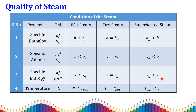Before getting into the problems, we need to identify the state or quality of the steam. There are three different conditions: wet steam, dry steam, and superheated steam. These are explained in detail in previous lectures. To recall: if the given specific enthalpy is less than the specific enthalpy of saturated vapor, it is wet steam. If the given specific enthalpy equals the saturated specific enthalpy of vapor, it is dry steam.